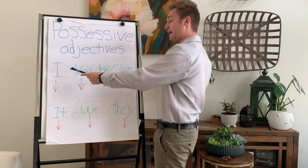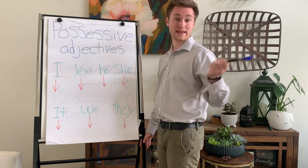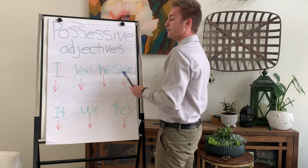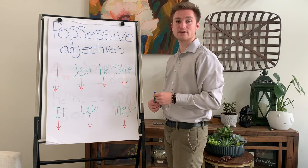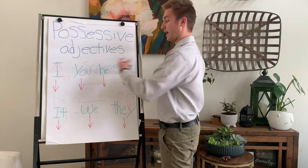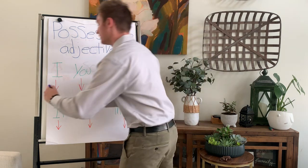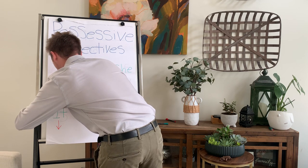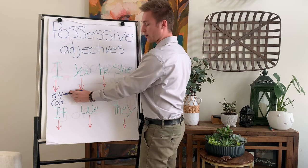We have many different possessive adjectives that we can use for each different word. For 'I', the possessive adjective is 'my'. I — my. My cat. So the word is 'my'.